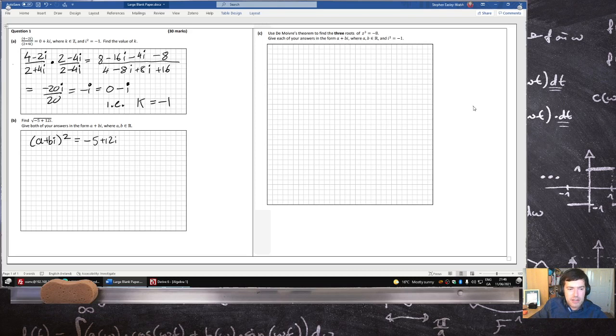If I expand here, I get a squared plus 2ab i plus b squared i squared, so that's minus b squared, equals minus 5 plus 12i.